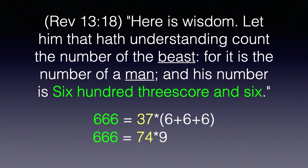Revelation 13:18: 'Here is wisdom, that him that hath understanding count the number of the beast, for it is the number of a man, and his number is six hundred threescore and six.' The number 666 is a multiple of 74 — it is 74 times 9. 74 is a special instance of 37 doubled. And 666 equals 37 plus 6 plus 6 plus 6. We are in the 18th verse — again, 6 plus 6 plus 6.